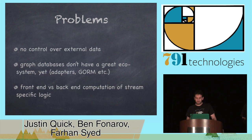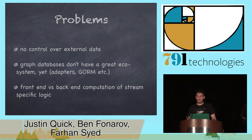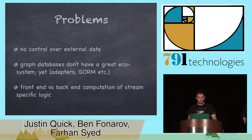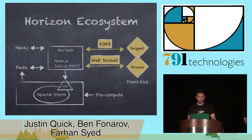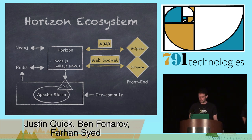What are the problems with something like this? First, we have no control over external data. If a photo changes its title, I don't know about it — you really need to live in an ecosystem that allows you to get that data back and be informed of such changes. Second, graph databases don't really have a great ecosystem yet — adapters are not that great, there's no real graph ORM, and I know because I wrote some of those adapters. And then there's front-end versus back-end computation — do you do the entire stream processing on the back end, or do you send it to the front end to do some of the computation? That leads to the next part, which is Farhan talking about the front-end modules.